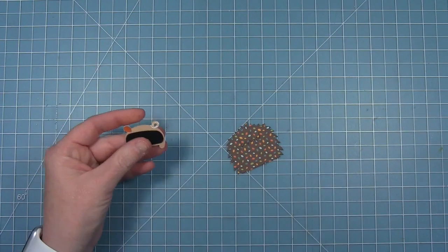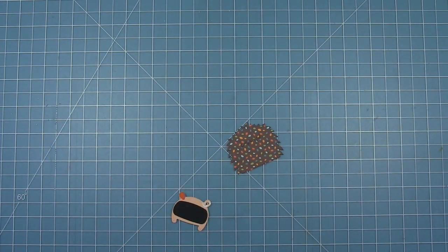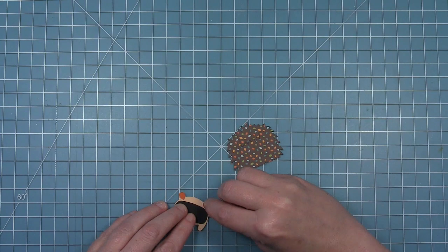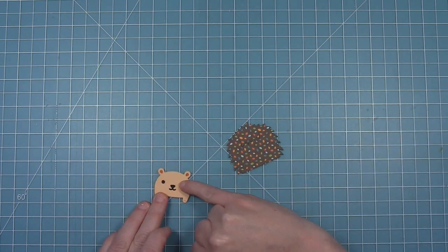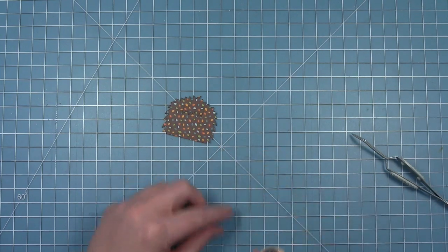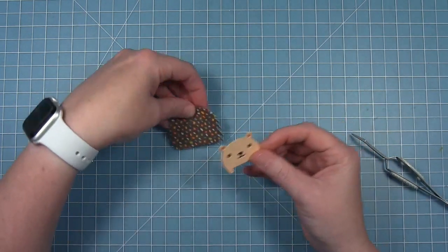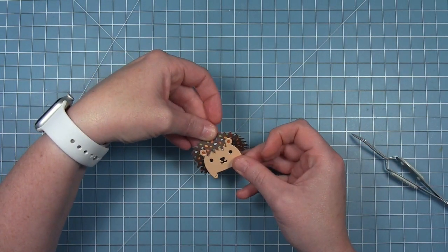I just thought it would be nice to kind of pull in all the colors that I'm going to use on this card into the hedgehog as well. Now that his face is all together, I can just add him to that piece of pattern paper to finish him off.